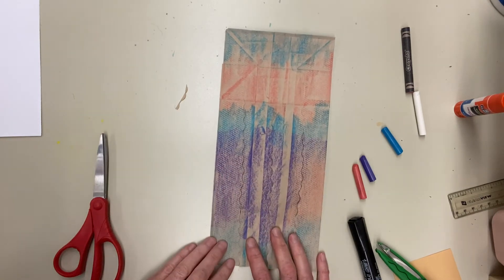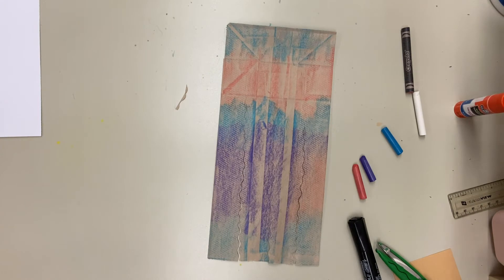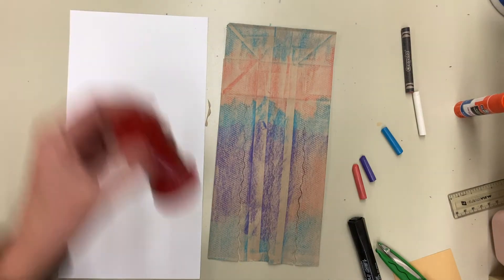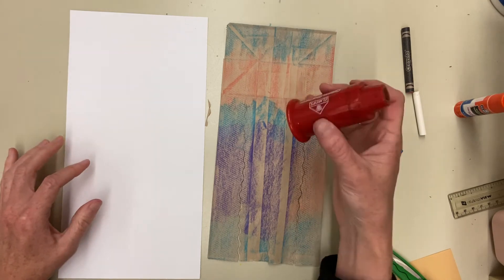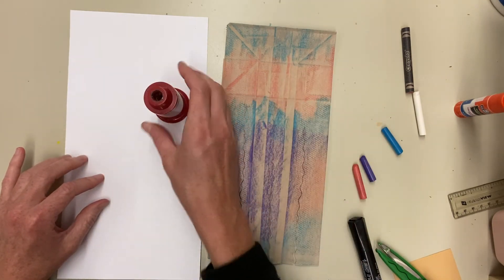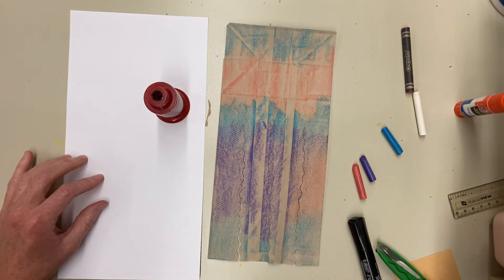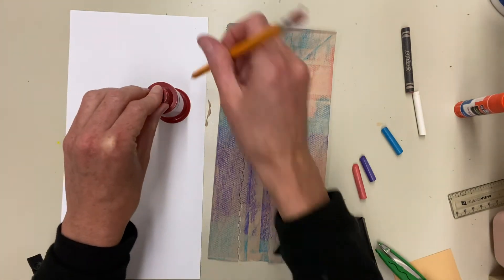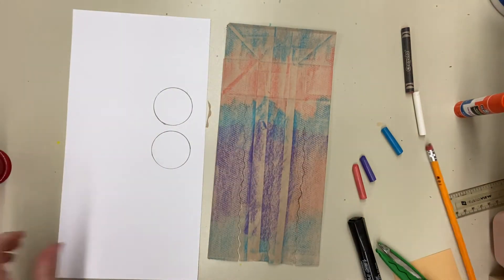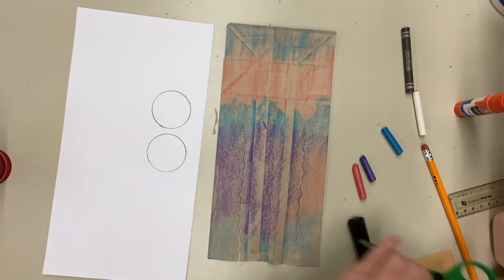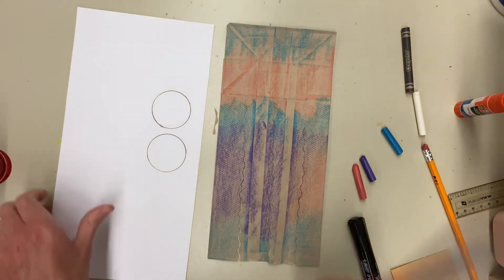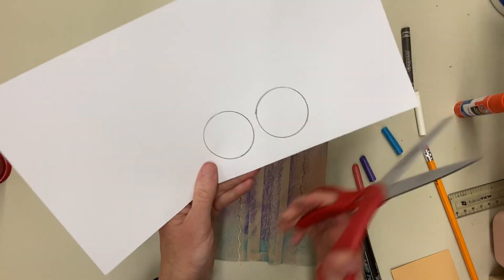So then the last thing I have to do is just make the face. So I'm going to take some white paper here and I'm going to find something to trace for a circle. Now I have Crayola crayon sharpener dispensers. Those are about the right size. I'm going to take my pencil and I'm going to trace two of them. And then I'm going to cut them out with a regular scissors. So I'm not going to use my pattern scissors for this. So using a regular scissors, I'm going to cut these out.